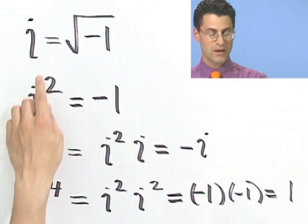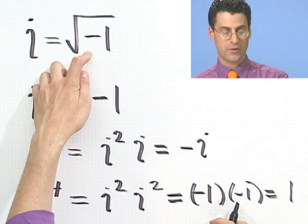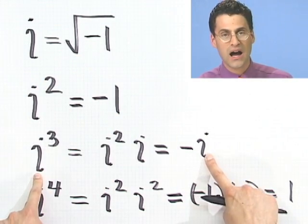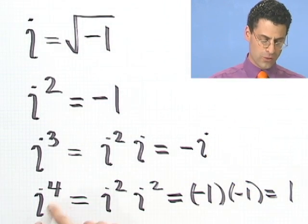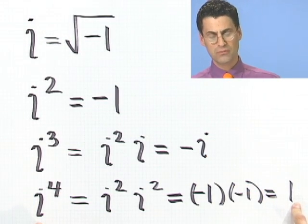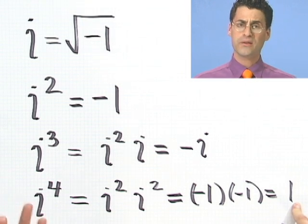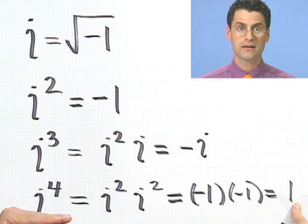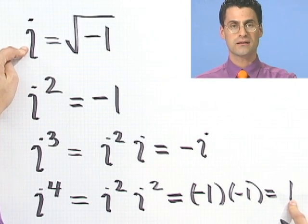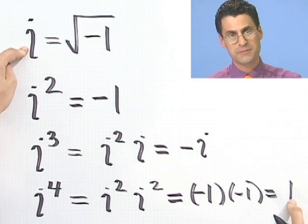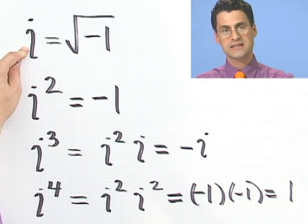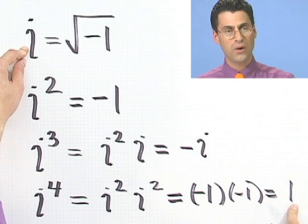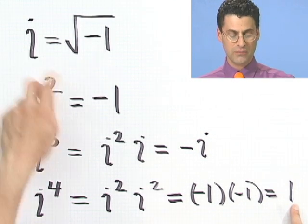So this is really neat. i equals the square root of minus 1, i squared equals minus 1, i cubed is just minus i, and i to the fourth is just 1. What would i to the fifth be? i to the fifth would just be i to the fourth times i. i to the fourth is 1, so we just get i again. And i to the sixth is i to the fourth times i squared — i to the fourth is just 1, so we just get i squared, which is minus 1.